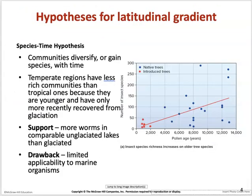When looking at ecology across the globe, we use latitude and longitude. Latitude lines are flat and parallel to the equator; longitudinal lines run from pole to pole. The latitudinal gradient describes how species change as you move toward or away from the equator. Over time, the number and diversity of species increases as communities diverge.